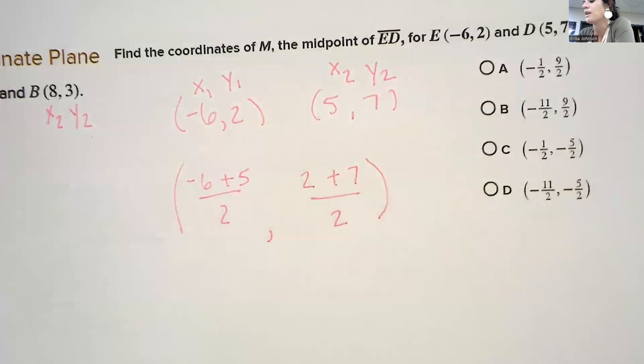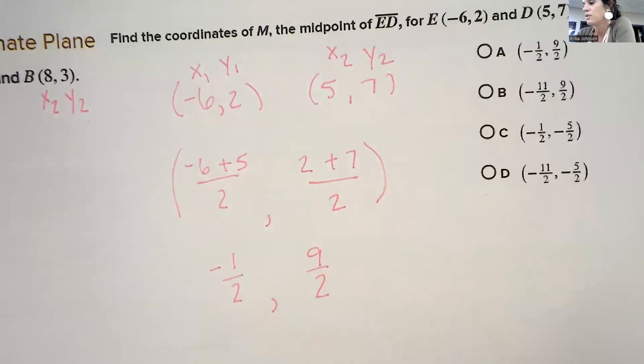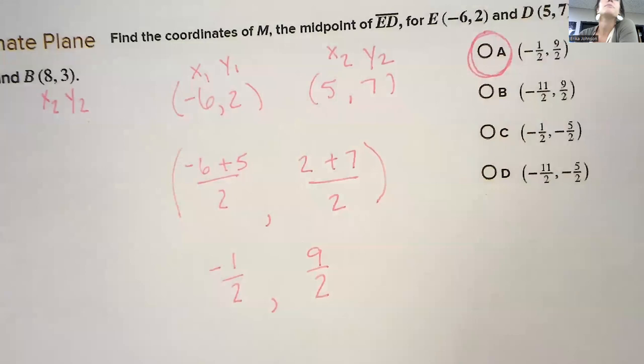That'd be negative 1 over 2. This would be 9 over 2. Match up to A.